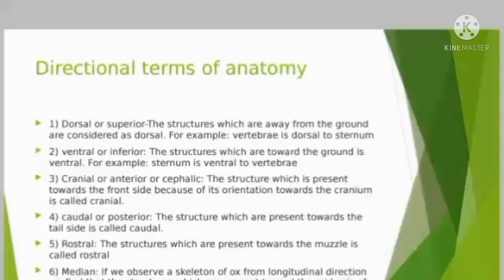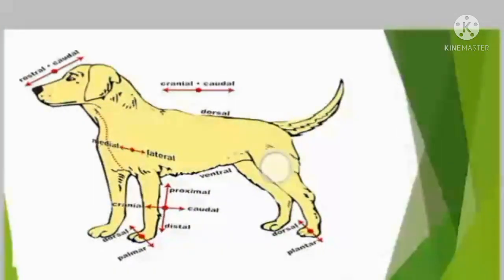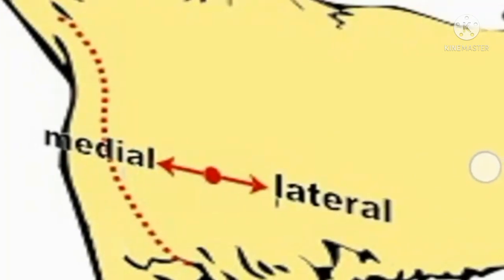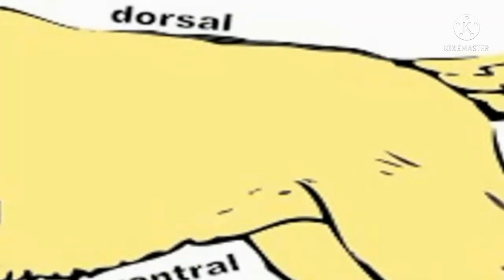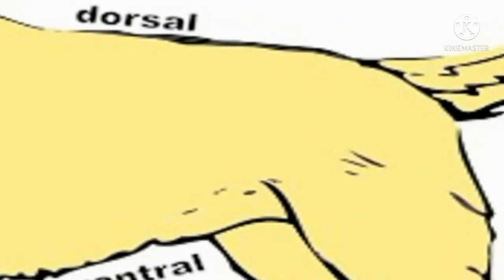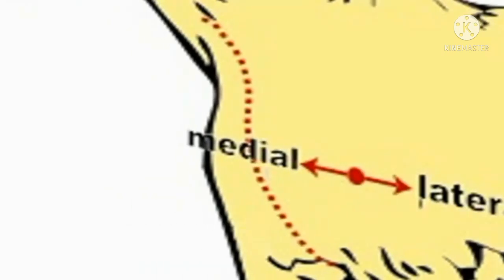Structures which are present towards the head region or front side are known as cranial, anterior, or cephalic. This is our cranial portion. Structures which are present towards the tail are known as caudal. Whatever structures are present toward the tail are caudal, and structures present toward the head are cranial.